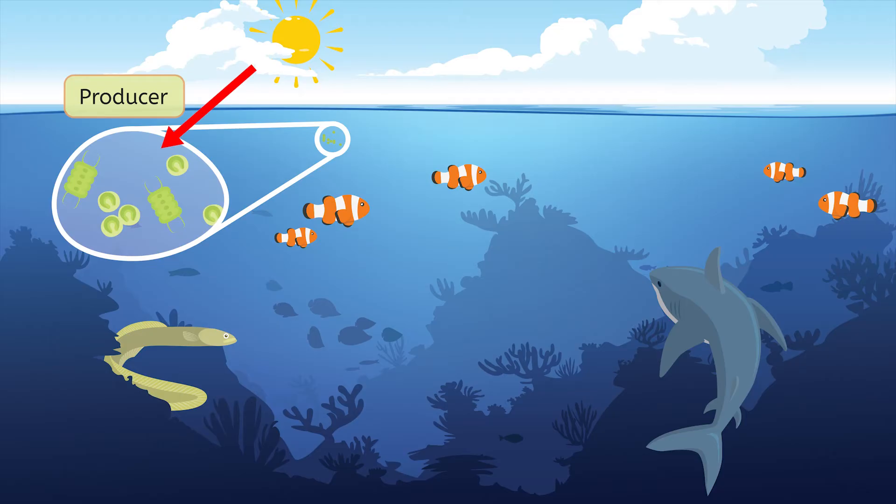Small fish, such as the clownfish, eat the phytoplankton. The phytoplankton's energy passes to the clownfish, making them a primary consumer.